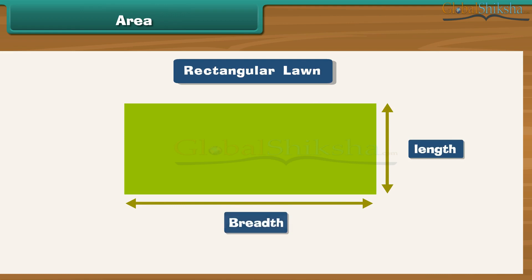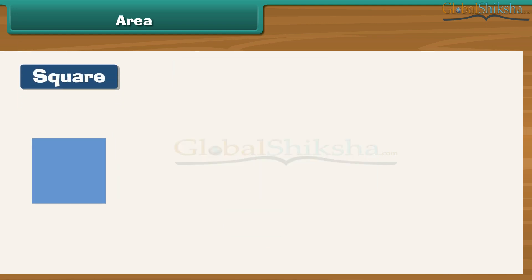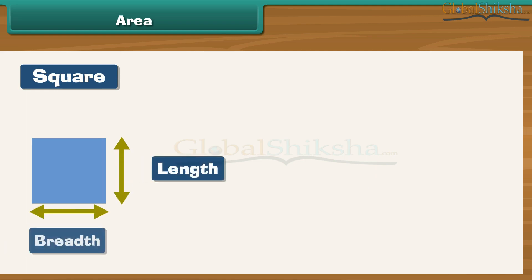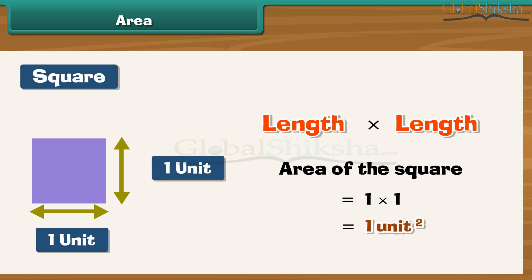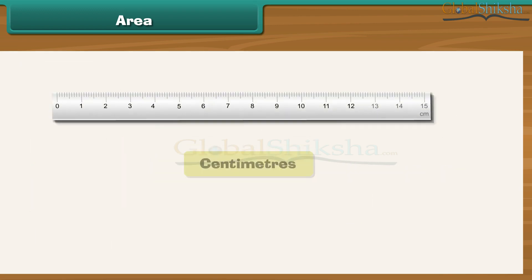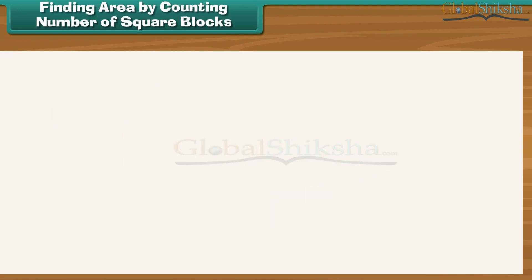The rectangular front lawn of Shreya's house is a two-dimensional figure with a length and a breadth. The total surface covered by a two-dimensional figure is known as its area. A square is a two-dimensional figure whose length is equal to its breadth. The area of a square is length times length. Just as there is a unit of measurement for length, there is one for area as well. We measure lengths in centimeters or meters; similarly, we measure areas in centimeter square or meter square.